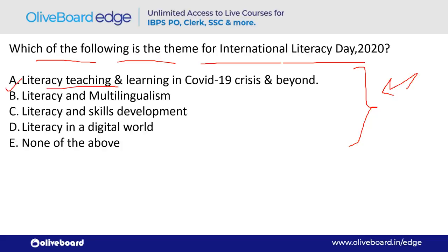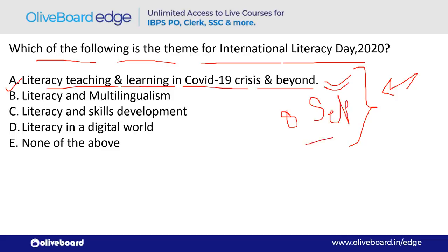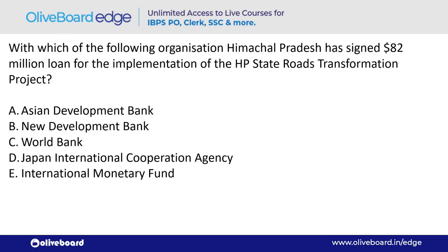What is the theme of International Literacy Day 2020? The theme is 'Literacy Teaching and Learning in the COVID-19 Crisis and Beyond' — option A. International Literacy Day is observed on 8th September every year.